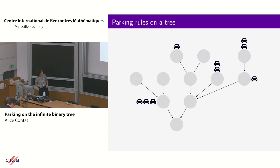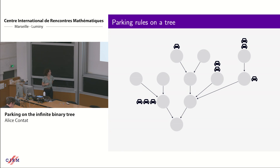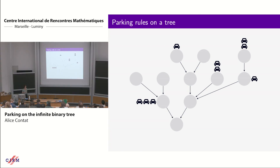On this tree we add a car decoration: on some vertices there are cars arriving. We park them using the following rule — each car has a preferred parking spot, its arrival vertex. If the arrival vertex is free, it parks there; if not, it follows the edges and takes the first available spot.